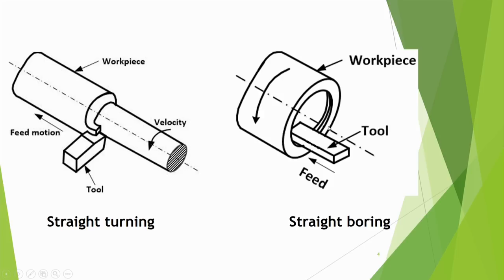In straight boring, the tool is rotating on the internal surface of the cylinder — otherwise everything is the same as straight turning, with speed motion and work piece present. Straight boring can be performed either on a lathe machine, a boring machine, or with the appropriate attachment on a drilling machine.